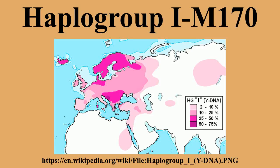Consequently, the haplogroup represents up to one-fifth of the male population of Europe, being the continent's second major Y-DNA haplogroup behind Haplogroup R. Haplogroup I-M170 Y-chromosomes have also been found among some populations of the Near East, the Caucasus, Northeast Africa, and Central Siberia.